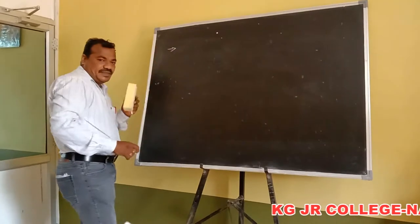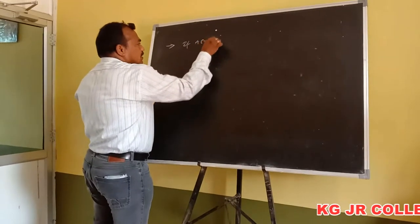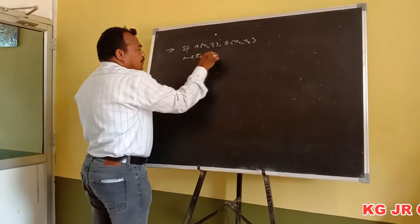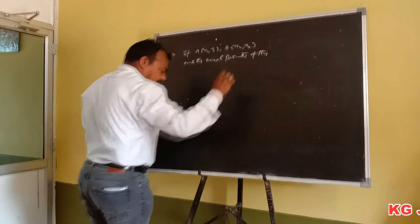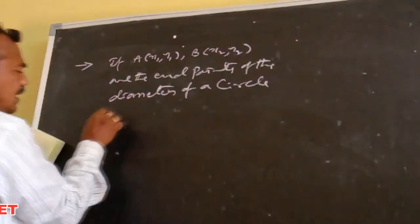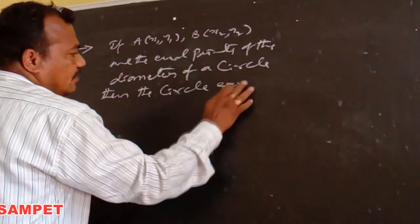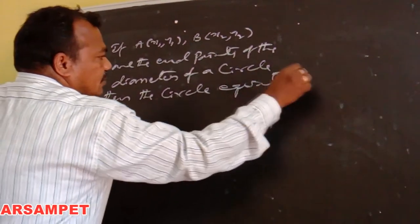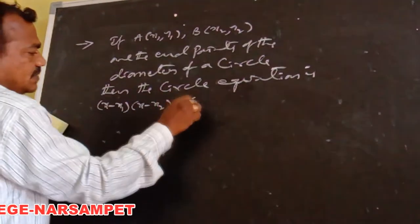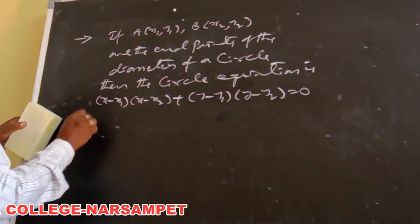Students, now I am explaining another one. If A(x1, y1) and B(x2, y2) are the end points of the diameter of a circle, then the circle equation is (x − x1)(x − x2) + (y − y1)(y − y2) = 0.